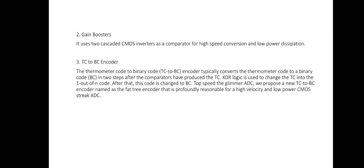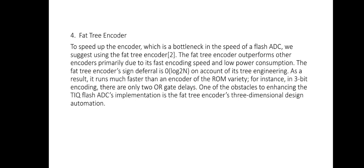To speed up the encoder, which is the bottleneck in flash ADC speed, we propose using a fat tree encoder. The fat tree encoder outperforms other encoders primarily due to its fast encoding speed and low power consumption. The size difference is zero due to its pre-engineering, so it runs much faster than encoders of other types. For instance, in 3-bit encoding there are only two gate delays. One obstacle to enhancing the TIQ flash ADC is three-dimensional design automation in the fat tree encoder.